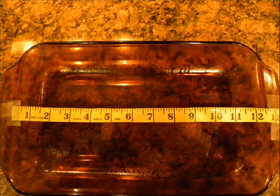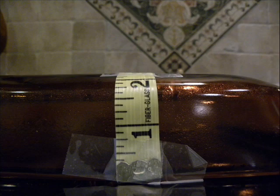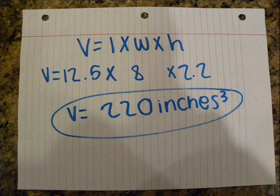One down, two to go. Let's start with the brownies. We should find the volume of the pan. It's a rectangular prism! To find the volume of the brownie pan, we need to use the equation: volume equals length times width times height. The length is 12.5 inches, the width is 8 inches, and the height is 2.2 inches. When you multiply them all together for the volume, you get 220 inches cubed.